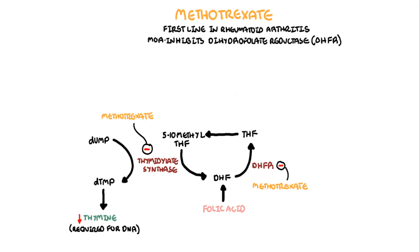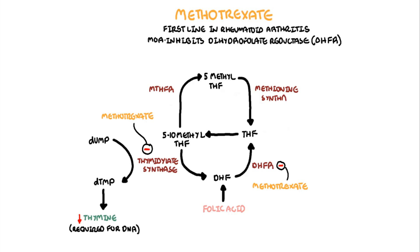5,10-methylenetetrahydrofolate becomes 5-methyltetrahydrofolate through the enzyme methylenetetrahydrofolate reductase. 5-methyltetrahydrofolate can be recycled to tetrahydrofolate through a co-reaction with methionine synthase, which uses vitamin B12. The second reaction involves the conversion of homocysteine to methionine.